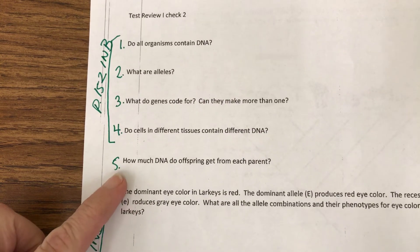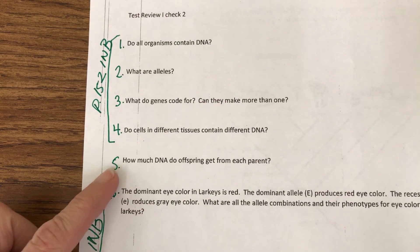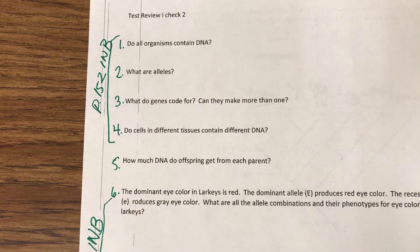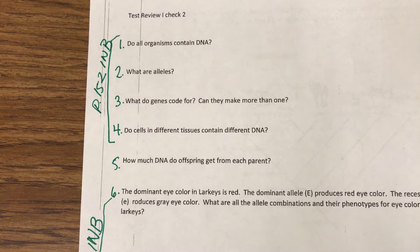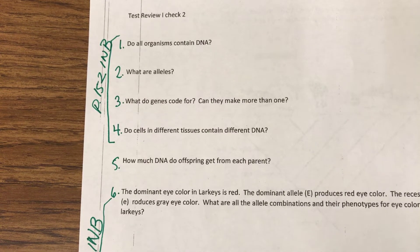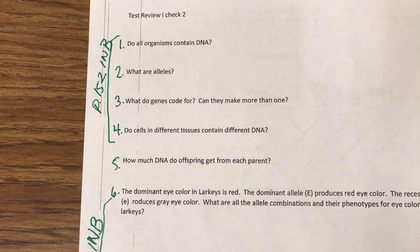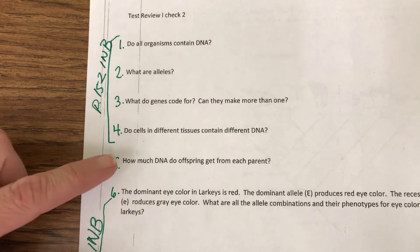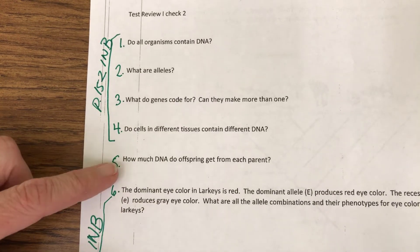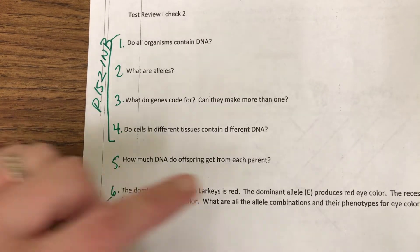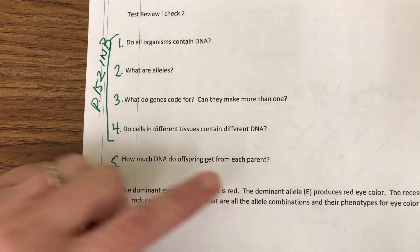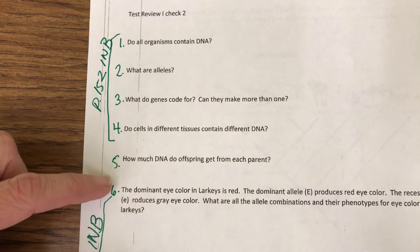Question number five — and this doesn't have a page number on it because we've talked about it so much — how much DNA do offspring get from each parent? And the answer is half from mom, half from dad. So half from one parent, half from the other.